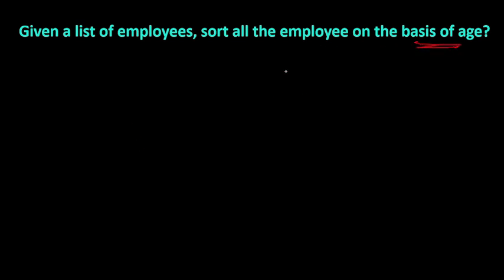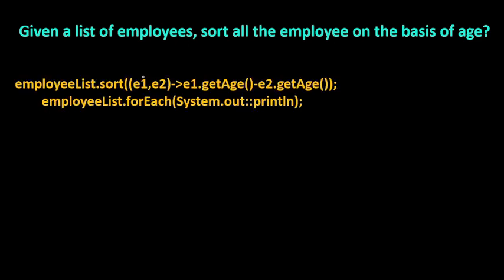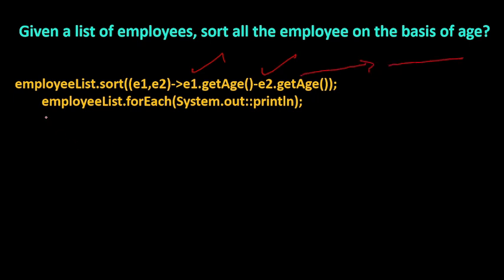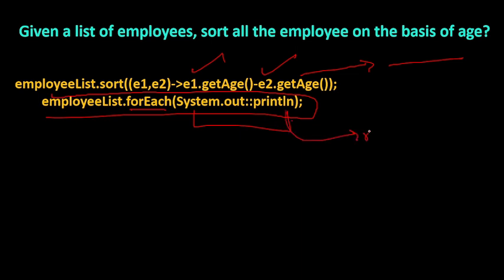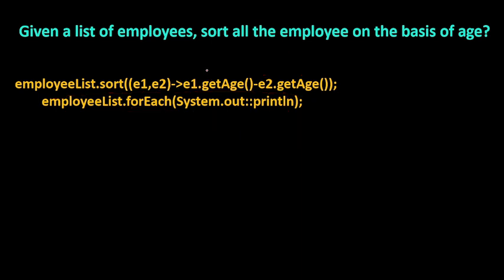Next: given a list of employees, sort by age. There are two types of sorting — customized sorting and natural sorting. We pass a lambda expression with two objects e1 and e2. If you pass e2 minus e1 it sorts in descending order; passing e1 minus e2 gives ascending order. After sorting, we use a forEach loop with a method reference to print the sorted results.